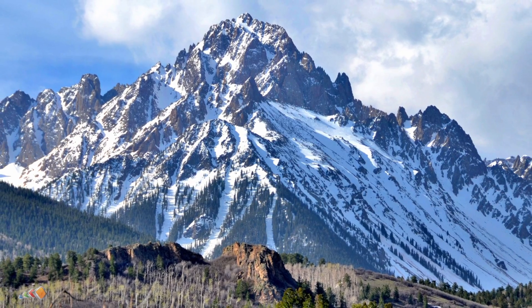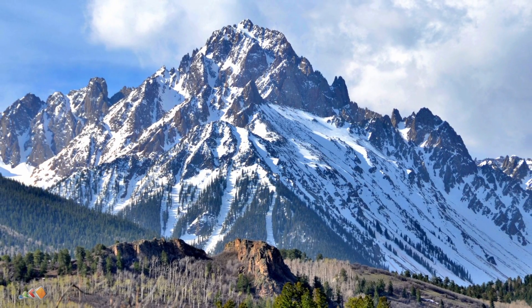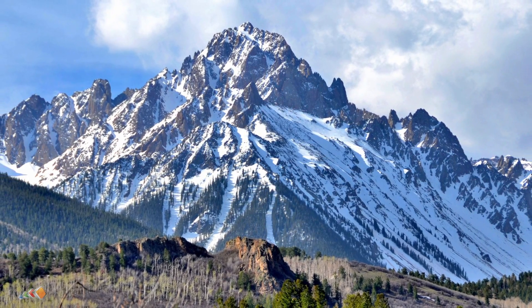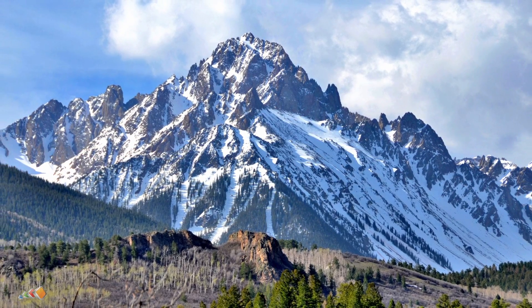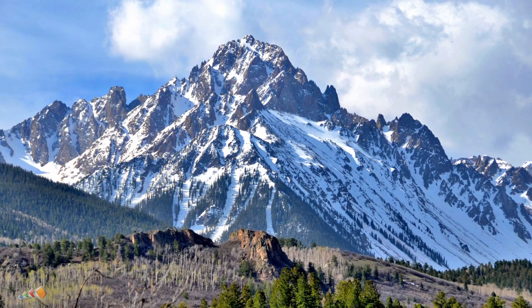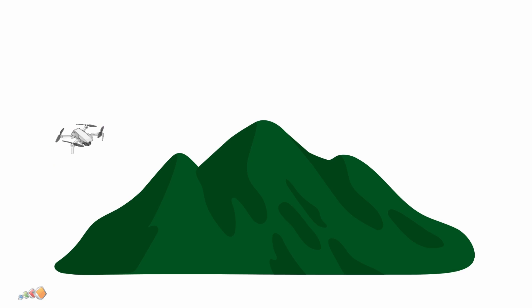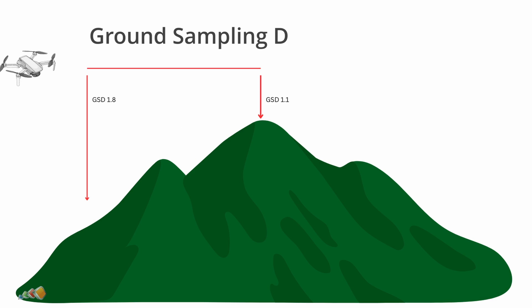Many sites have very large elevation changes, so planning a flight based solely on the height above the home location can cause inaccuracies or insufficient overlap, or even cause the drone to fly into an object or into the ground. Also, with varying elevation changes, the ground sampling distance will be variable across the site, which results in variable accuracy.